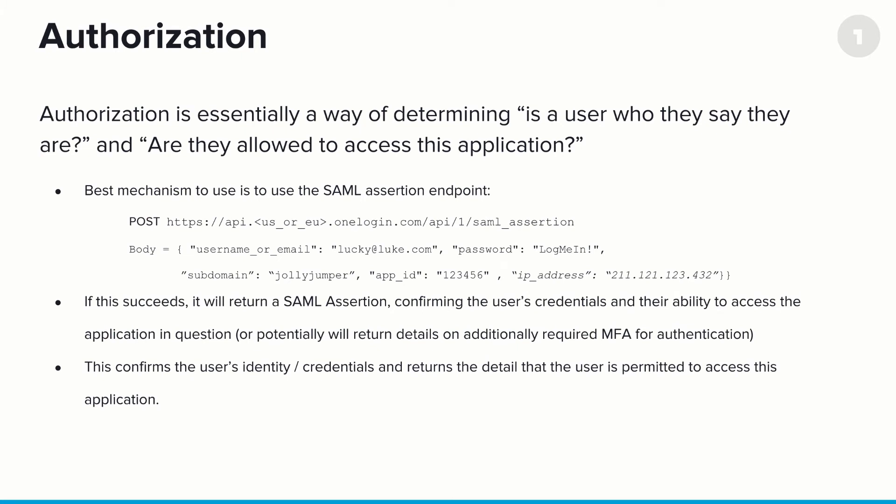Authorization is essentially determining whether a user is who they say they are and whether they're allowed to access a particular application. The best mechanism for this is the SAML assertion endpoint. This functions similarly to the previous endpoint, except in addition to the username and password, you also pass in an application ID. If this succeeds, it returns a SAML assertion confirming not just the user's credentials, but also their ability to access the application in question — or potentially returns MFA details if further authorization is needed.